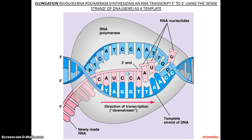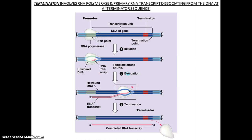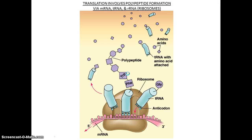In eukaryotes, elongation again involves reading the 3' to 5' template strand, with RNA adding nucleotides in the 5' to 3' direction. When it reaches a terminator sequence, the RNA transcript is made, RNA polymerase is released, and you have your RNA transcript. In eukaryotes, there is also extra RNA processing, which will be discussed in another screencast.